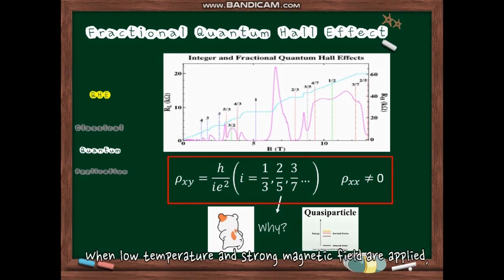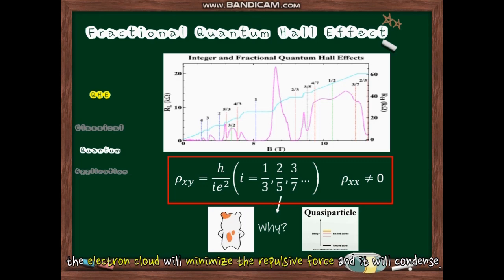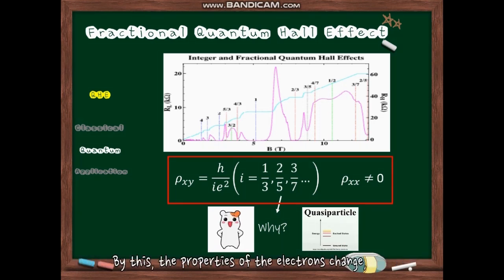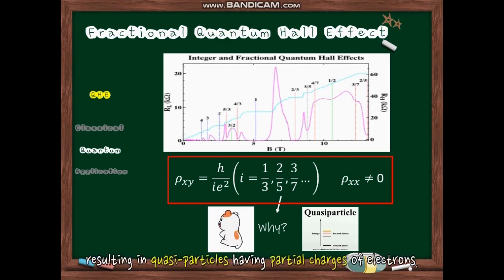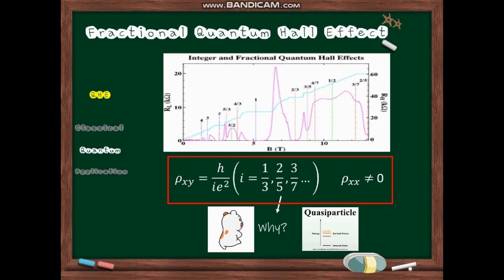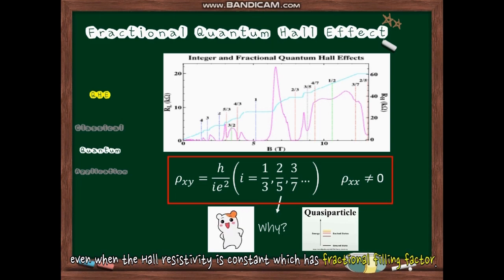When low temperature and strong magnetic fields are applied, the electron cloud will minimize the repulsive force and it will condense. By this, the properties of the electrons change, resulting in quasiparticles having partial charges of electrons. In this case, diagonal resistivity does not disappear even when the Hall resistivity is constant which has fractional filling factor.